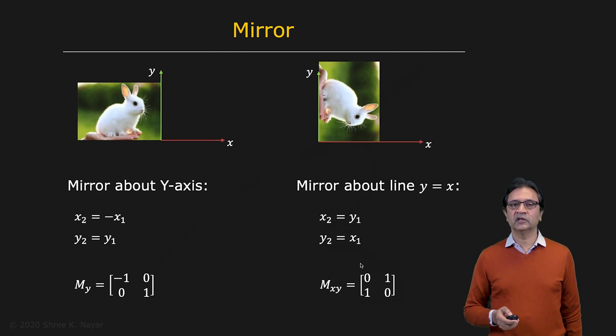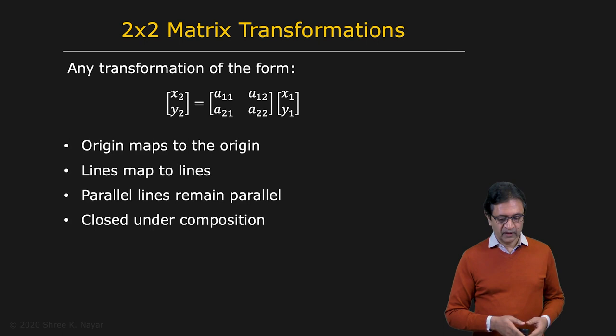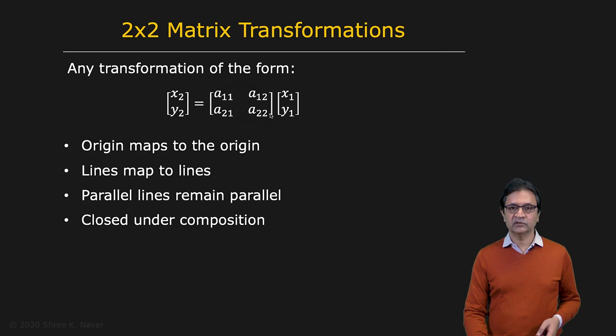So lots of simple but useful things that you can do using just a two by two transformation matrix. So there's your two by two transformation matrix. And here are some properties of this class of transformations. The origin maps to the origin. If I plug in 0, 0 here, you're going to get 0, 0 here. Lines map to lines. This is easy to show. You can plug in an equation of a line on the right hand side here and see that it is indeed a line on the left side as well. And then parallel lines remain parallel.